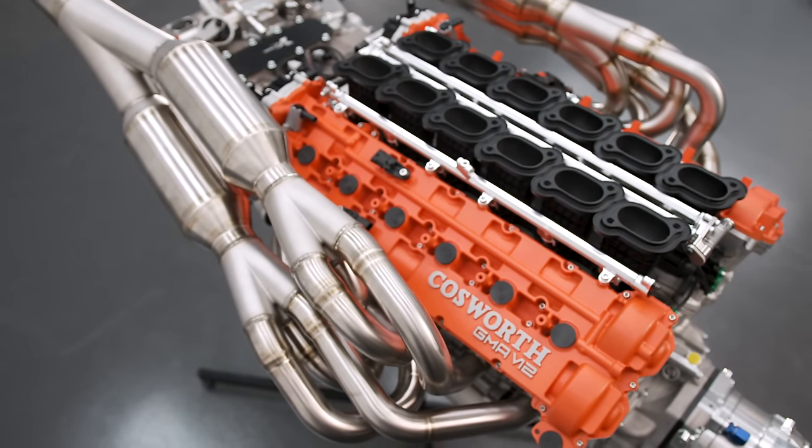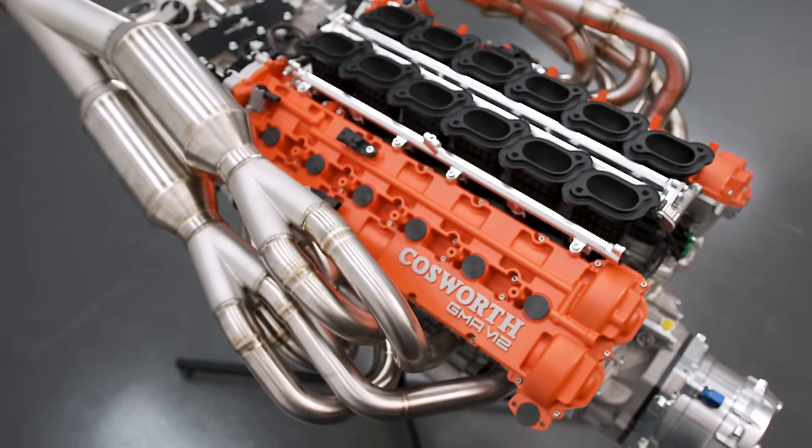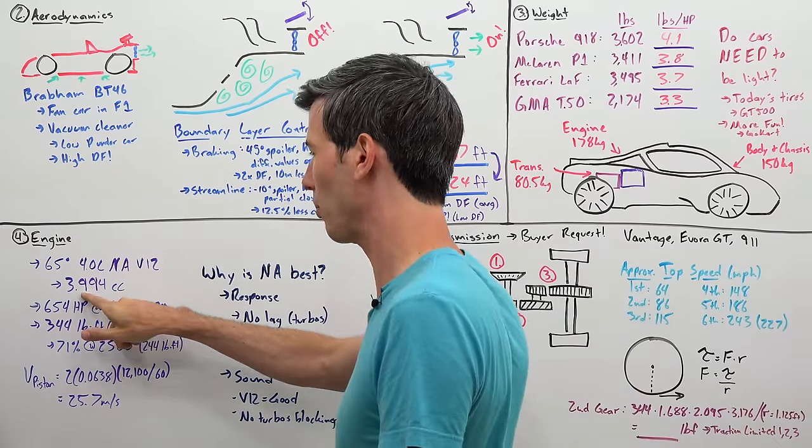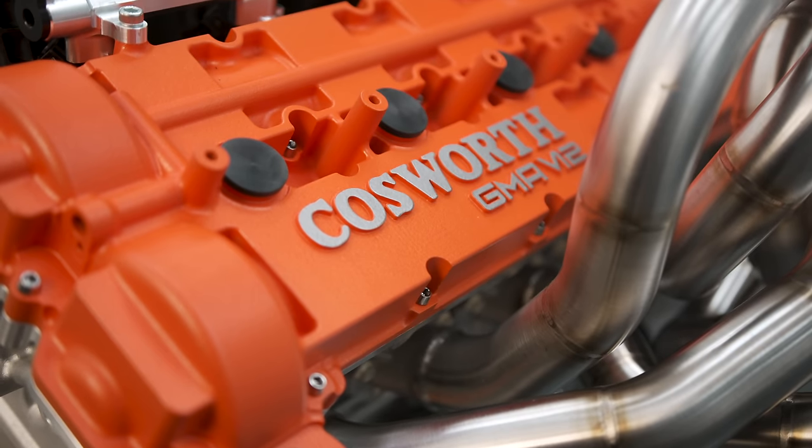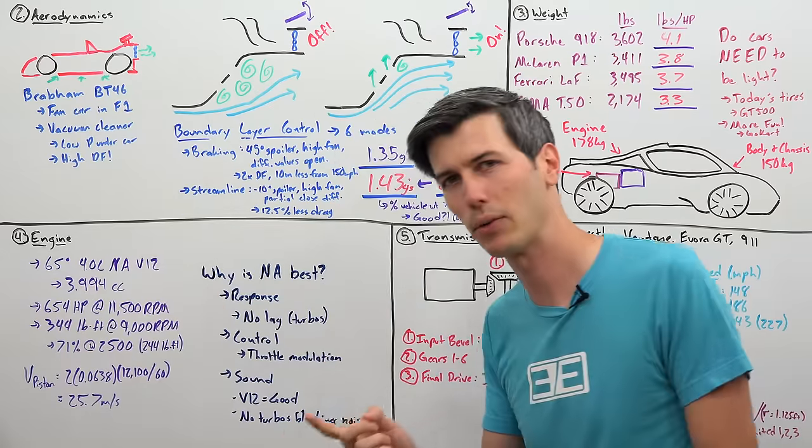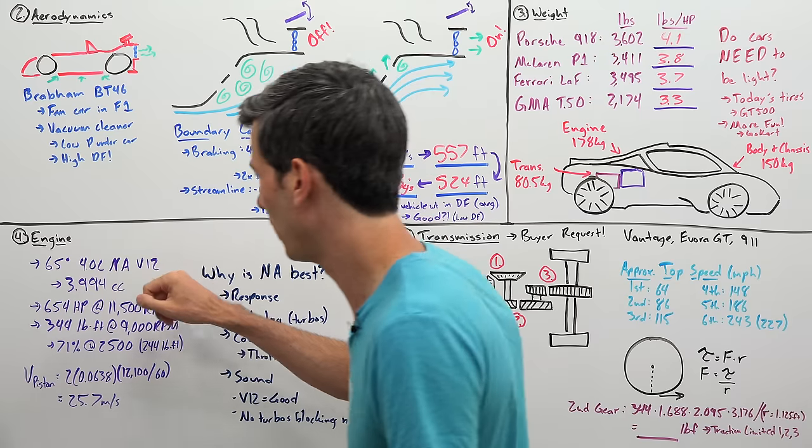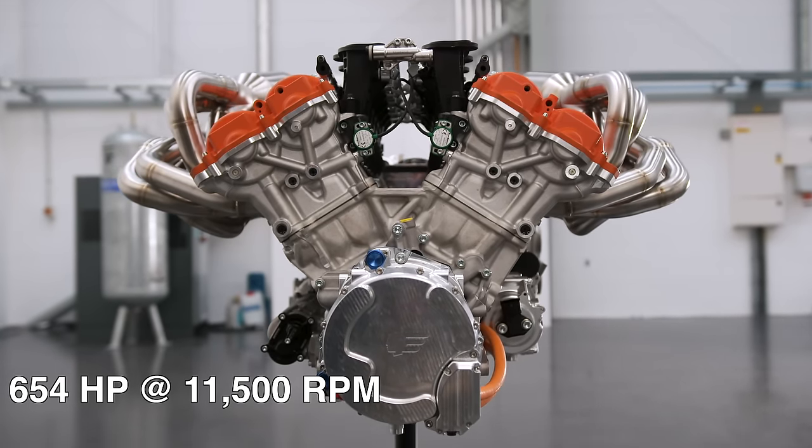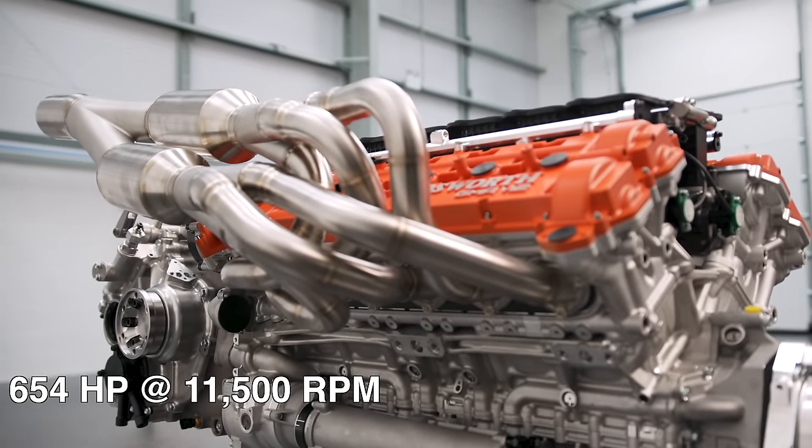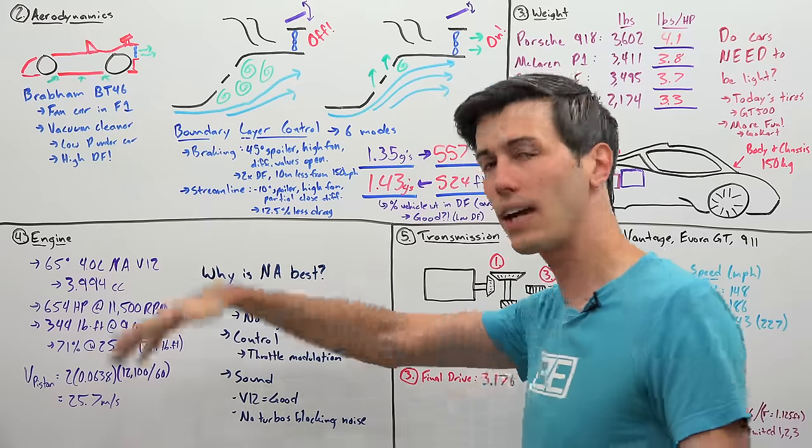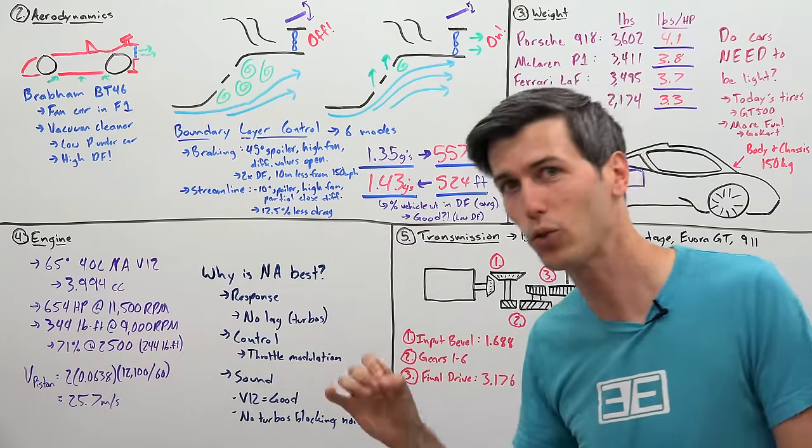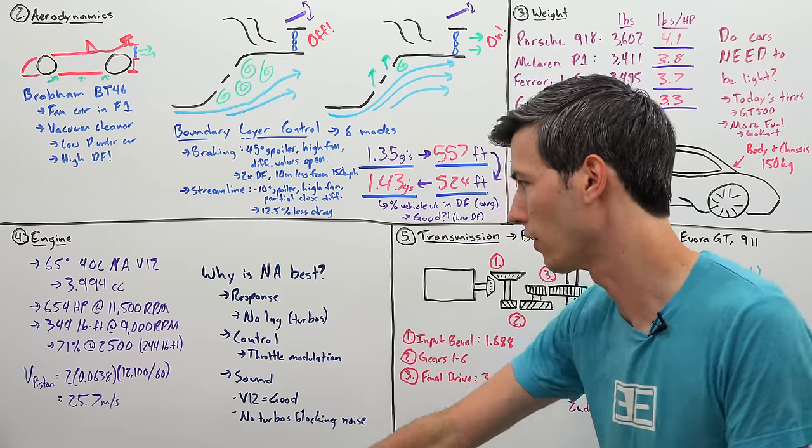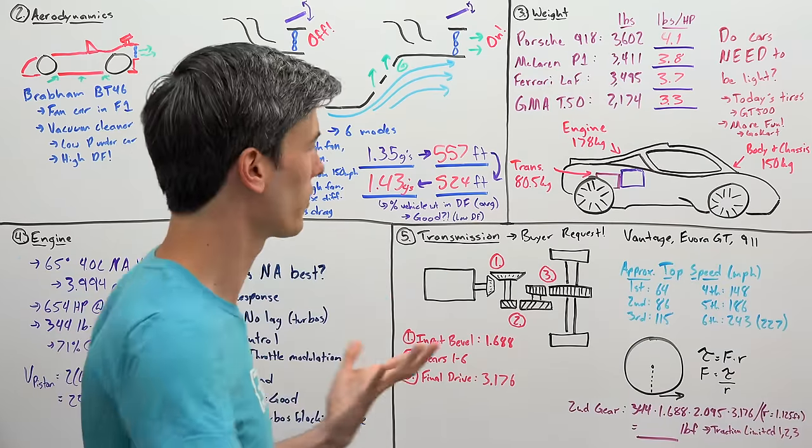Moving on to number four is the very special engine used in this car. So, it's a 65 degree 4 liter naturally aspirated V12. Now, you may hear it referred to as a 3.9 liter. If you look at the actual displacement, it's 3.994. So, this is absolutely a 4 liter engine. I'm not great at many engineering things. And I would say Gordon Murray is better than me at probably all of them. Except for rounding. I definitely beat him here on rounding. Because 3.994, that goes to 4 liter. Regardless, 654 horsepower at 11,500 RPM. The most horsepower per liter in a naturally aspirated road going car today. 344 pound feet of torque at 9,000 RPM. And 71% of that torque is available at just 2,500 RPM. So, even though it revs to 12,100 RPM, it still has torque at 2,500 RPM. Which is pretty impressive. About 244 pound feet. The velocity of the piston, 25.7 meters per second. Very fast.